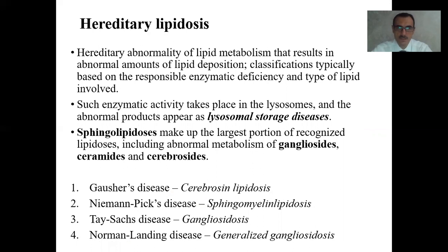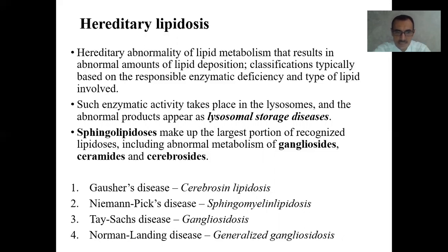Hereditary lipidosis is hereditary abnormality of lipid metabolism resulting in abnormal amounts of lipid deposition. Classifications are typically based on the responsible enzymatic deficiency and type of lipid involved. Such enzymatic activity takes place in the lysosomes, and abnormal products appear as lysosomal storage diseases. Sphingolipidoses make up the largest portion of recognized lipidoses, including abnormal metabolism of gangliosides, ceramides, and cerebrosides. We will discuss four types: Gaucher disease (cerebroside lipidosis), Niemann-Pick disease (sphingomyelin lipidosis), Tay-Sachs disease (gangliosidosis), and Normann-Landing disease (generalized gangliosidosis).